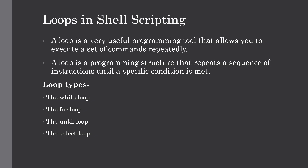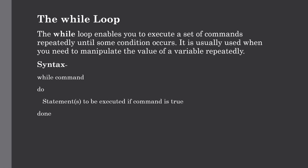A loop is a program structure that repeats a sequence of instructions until some specific condition is satisfied. Majorly four loop types are present in shell scripting: the while loop, for loop, until loop, and select loop. We will use different loops based on different situations. The while loop executes given commands while a condition remains true, whereas the until loop executes until a condition becomes true. Let us discuss these loops one by one, starting with the while loop.